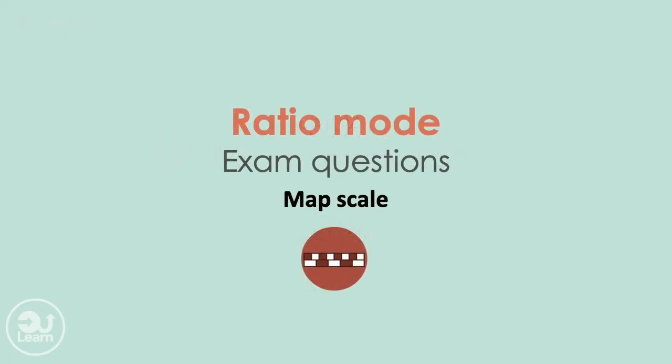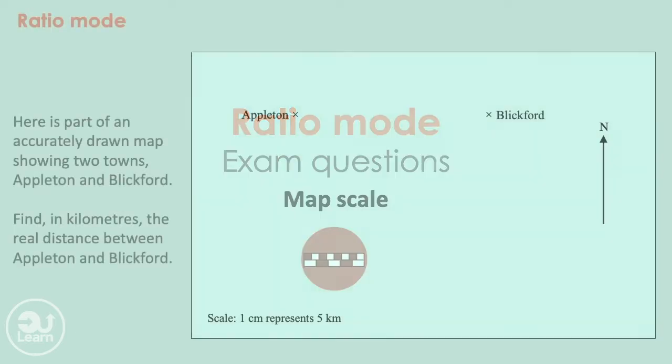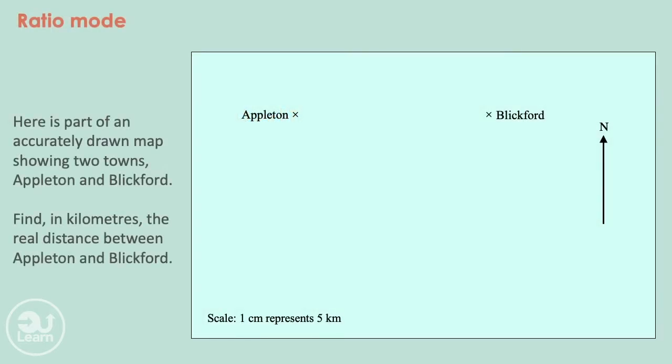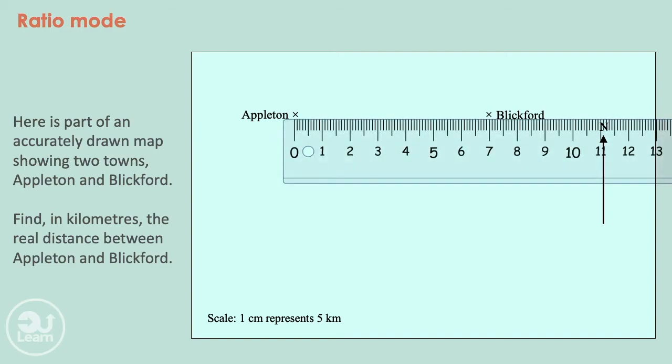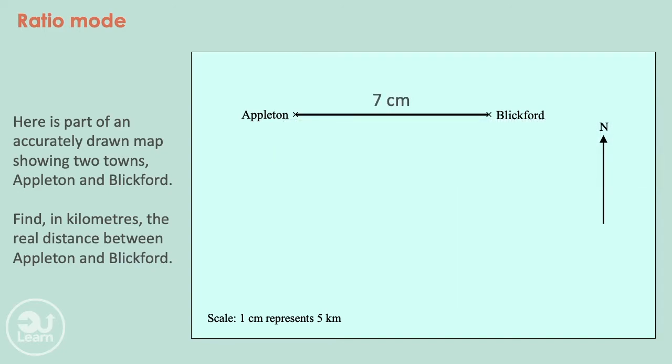Moving to our next question, this mode also works with map scales. So here's part of an accurately drawn map showing two towns, Appleton and Blinkford. Find in kilometres the real distance between Appleton and Blinkford. At the bottom we have a scale of 1cm representing 5km. So let's first measure the distance between the two places. The distance between the two places is about 7cm.